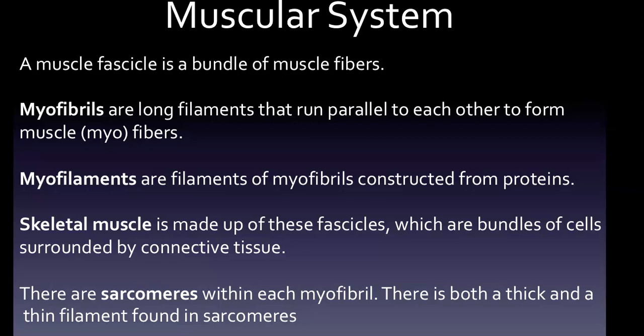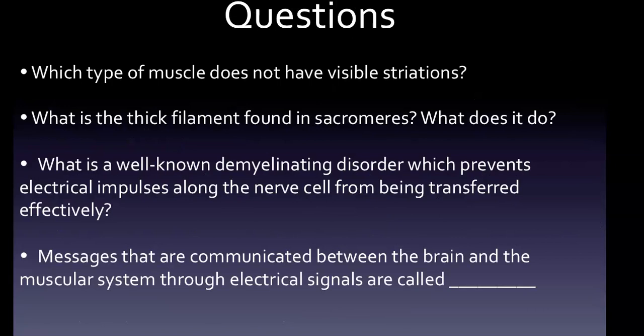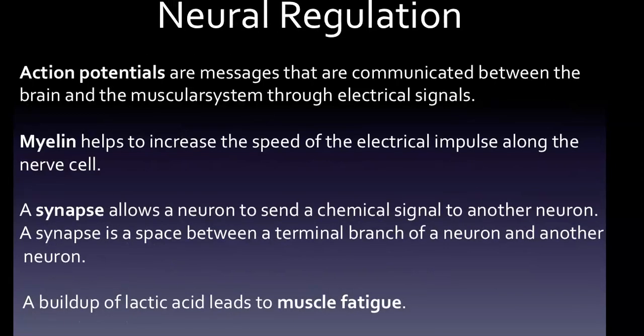Contraction of a muscle occurs when myosin binds and releases actin. Moving into neural regulation, action potentials are messages that are communicated between the brain and the muscular system through electrical signals — that relates to our last question. Messages communicated between the brain and the muscular system through electrical signals are called action potentials.